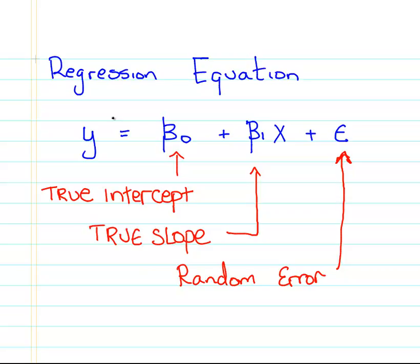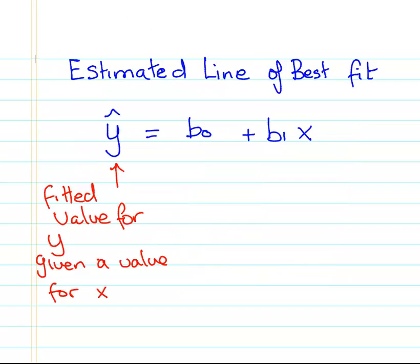What we have here is a mathematical relationship between some variable Y and some variable X. X is said to cause Y or predict Y. So we call it the predictor variable X and Y the response variable. The components are the true intercept, the true slope and also the random error term there at the end. The random error term is interesting but it's not what we are going to look at right now.